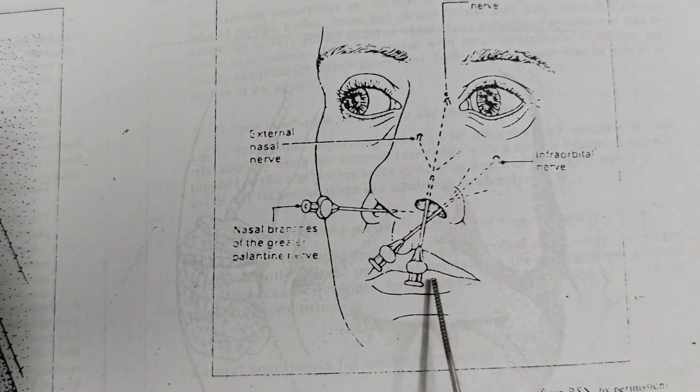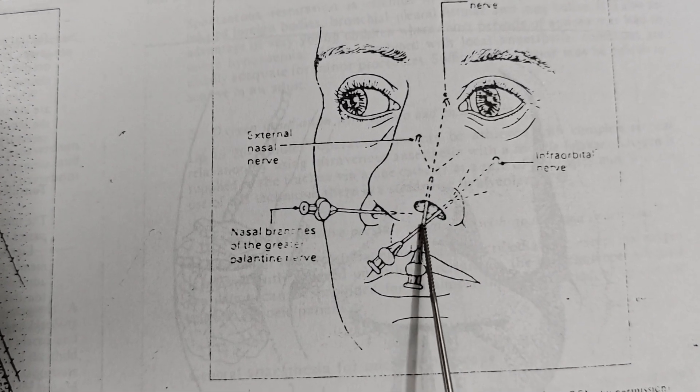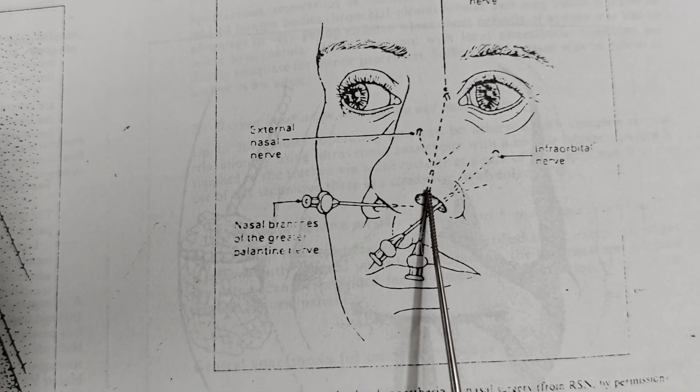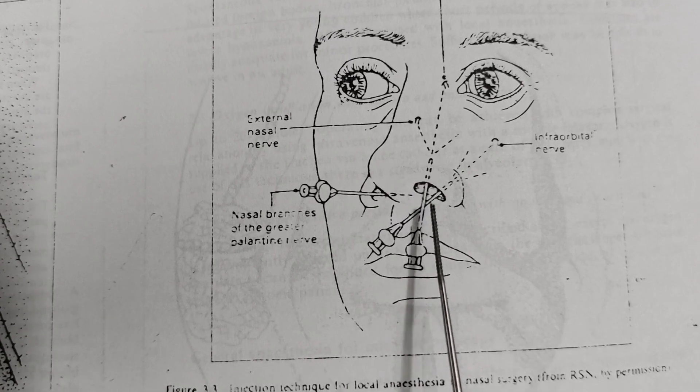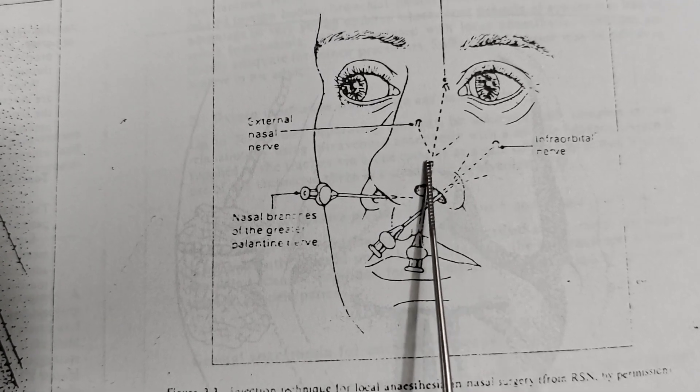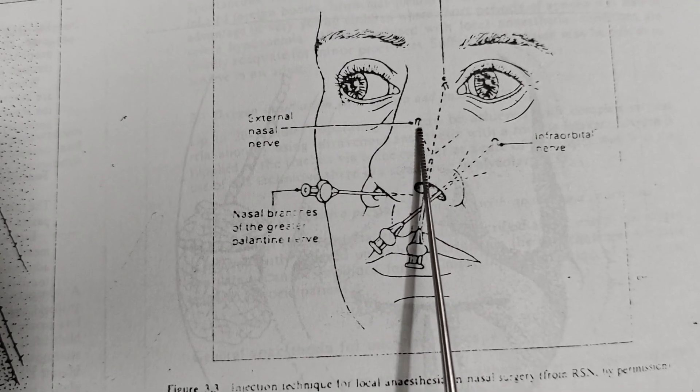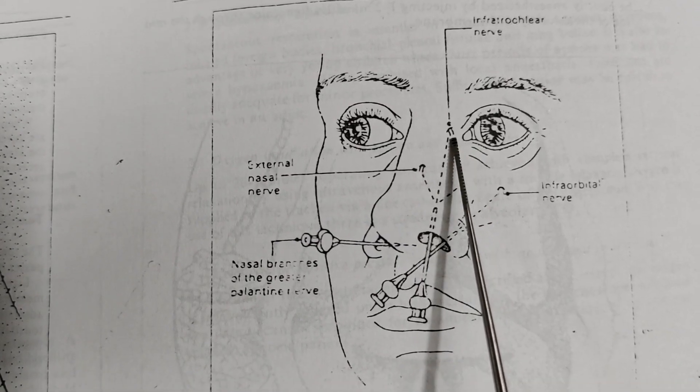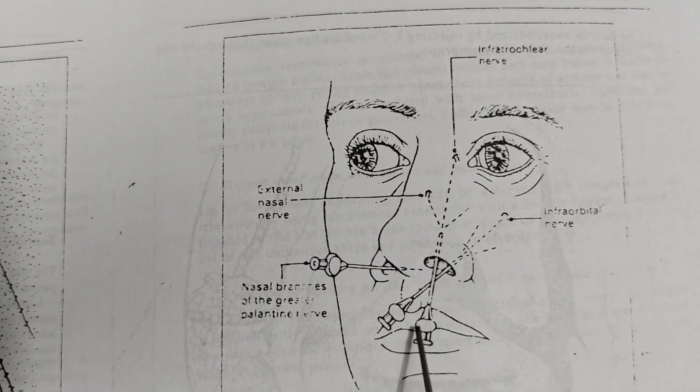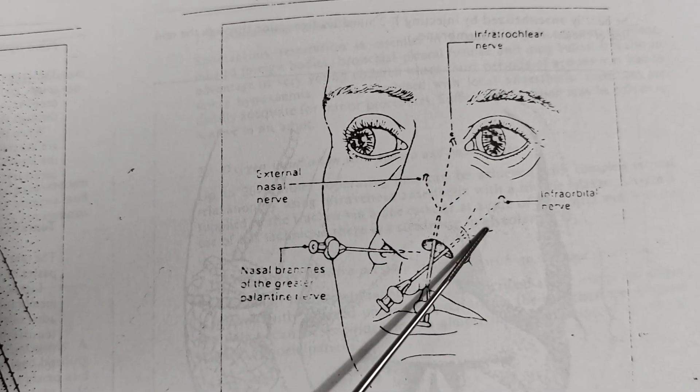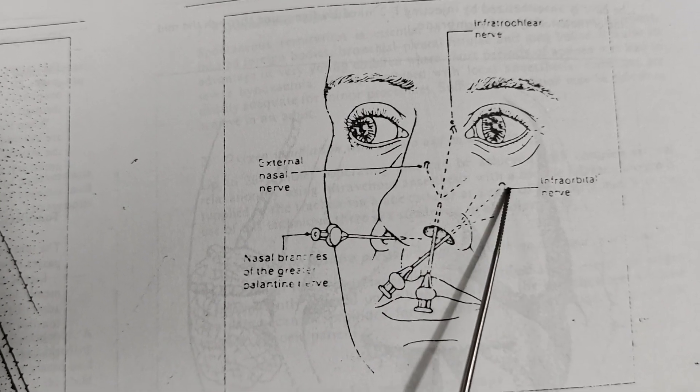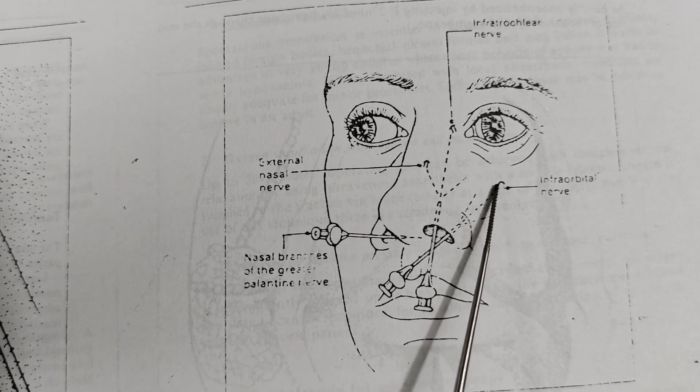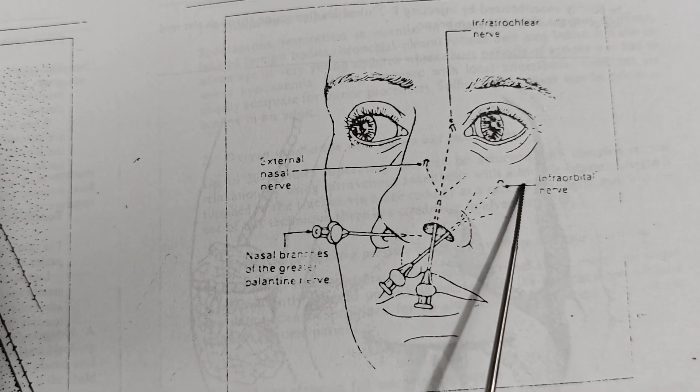These nerves can be blocked by passing the needle in between the upper and lower lateral nasal cartilages. The needle is advanced upward to block the external nasal nerve and the infratrochlear nerve. The needle is directed laterally, or it can be used as the sublabial approach to reach the infraorbital foramen to address this nerve.